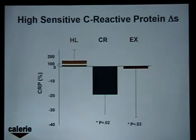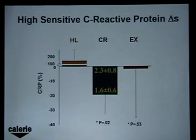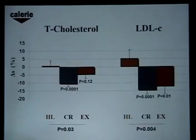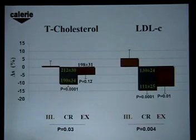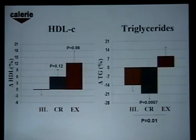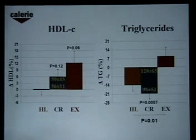C-reactive protein, a good marker of inflammation, dropped significantly only in the CR group. We don't know why, but these are the data. Total cholesterol dropped significantly only in the CR, from 212 to 190. LDL dropped from 130 to 111 in both CR and exercise. HDL, as we know, exercise has an important effect in raising HDL.